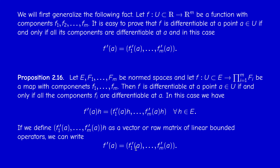We can put all these linear bounded operators into one vector or row matrix. This notation is very convenient: when I apply an increment H, I get the vector in the product of F_i. So F prime of A is a vector of linear bounded operators.